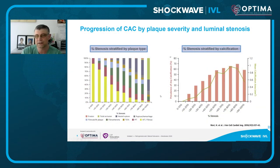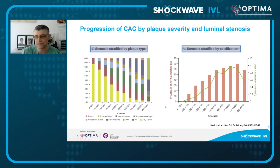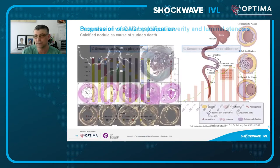An important association is between percent stenosis and plaque type. Early stages of atherosclerosis usually show less narrowing, while more progressive disease shows greater percent stenosis — which also associates with a greater level of calcification. Vessels that are severely stenosed have a higher likelihood of showing severe calcification.